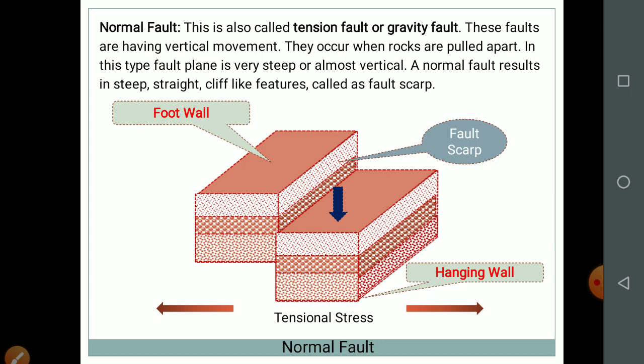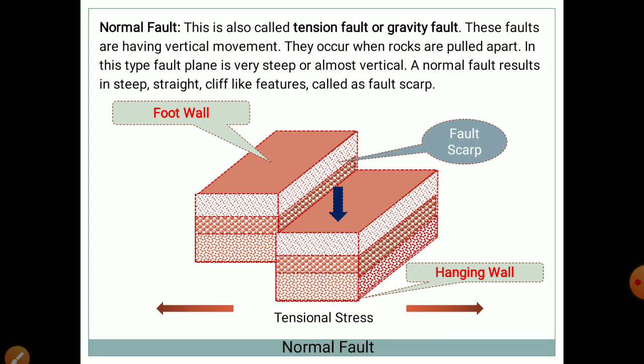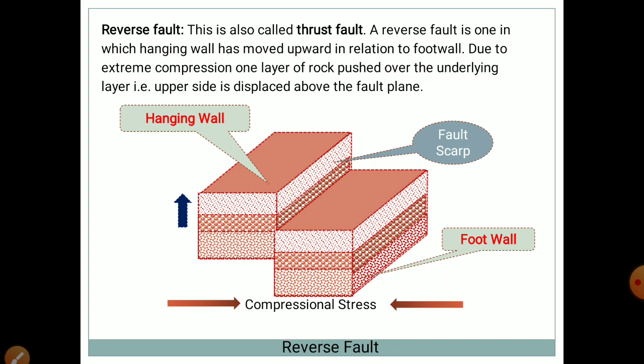The normal fault is also called a tensional fault or gravity fault. These faults have vertical movement and occur when rocks are pulled apart. The fault plane is very steep or almost vertical. A normal fault results in steep, straight, cliff-like features such as a fault scarp. Here we have the foot wall and the hanging wall labeled. The reverse fault is where the original block remains as it is but one block moves upward.